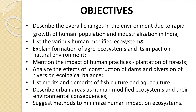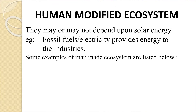Before we go into the detail of the lesson, let us go through the objectives. First, describe the overall changes in the environment due to rapid growth of human population and industrialization in India. List the various human modified ecosystems. Explain formation of agro-ecosystems and their impact on natural environment. Mention the impact of human practices and plantation of forests. Analyze the effects of construction of dams and diversions of rivers on ecological balance. List merits and demerits of fish culture and aquaculture. Describe urban areas as human modified ecosystems and their environmental consequences. Suggest methods to minimize human impact on ecosystems.